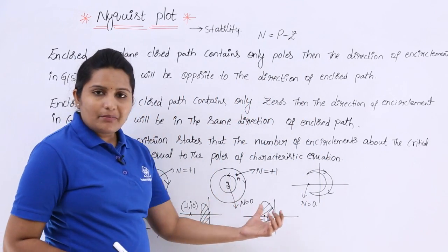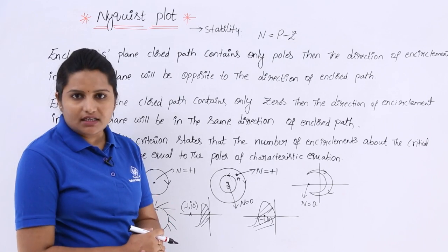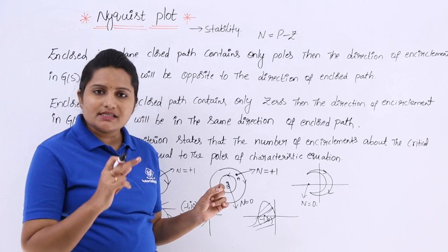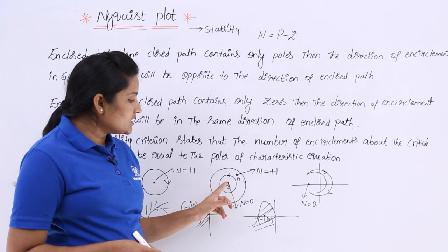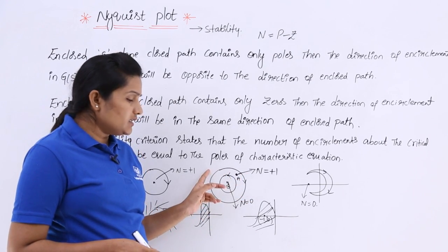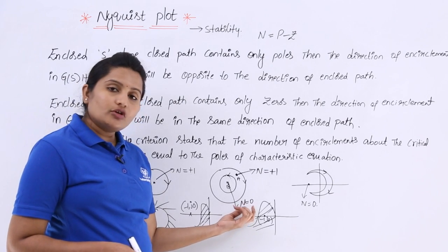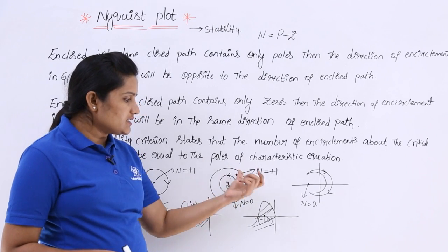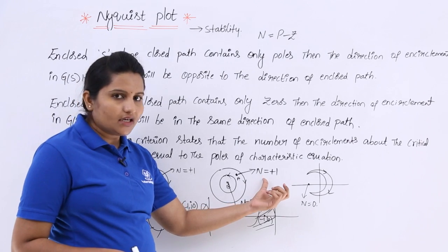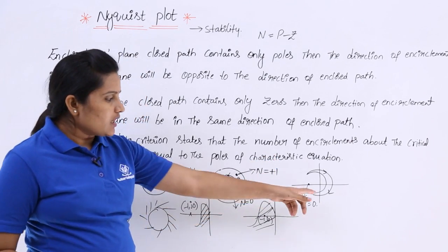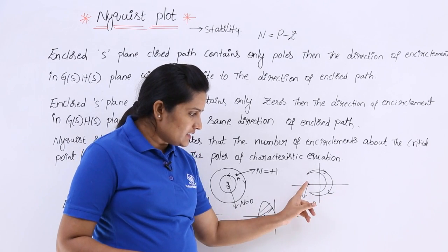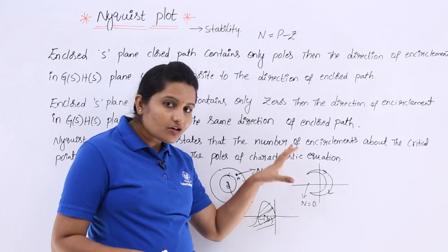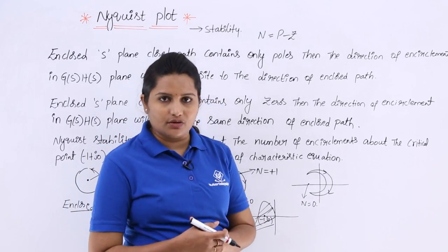When you have many encirclements, for each point you need to see how many encirclements there are and in which direction they are. For this point there are two encirclements — one in each direction — so both nullify and N = 0. For another point, there is only one encirclement in the clockwise direction, so N = +1. If a point is encircled like an open path, that is not treated as an encirclement and the N value is 0.